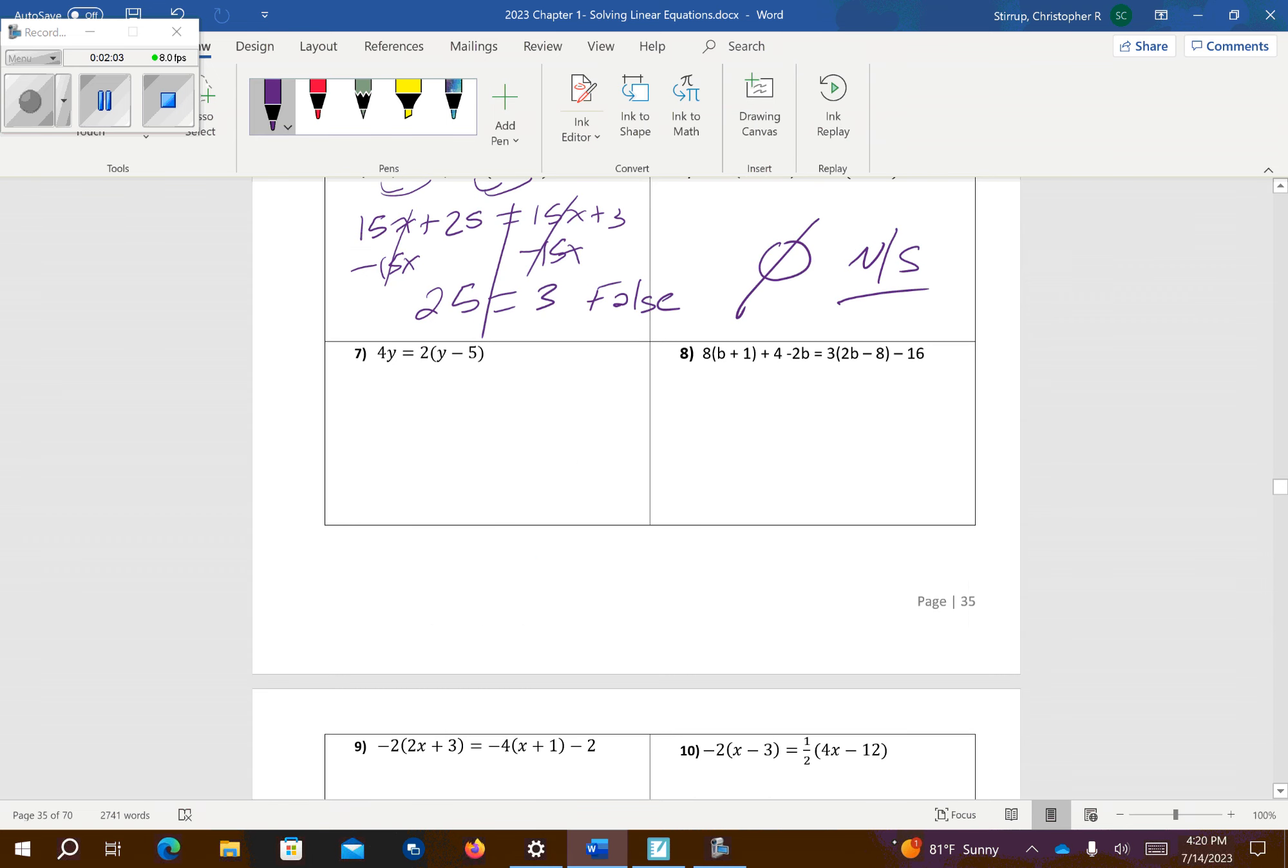All right, problem number 7. Now, I'm going to distribute the 2 over the parentheses, so I get 4y equals 2y minus 10. Subtract 2y, subtract 2y. And that's going to give me 2y is equal to negative 10, divided by 2, divided by 2, so y equals negative 5.